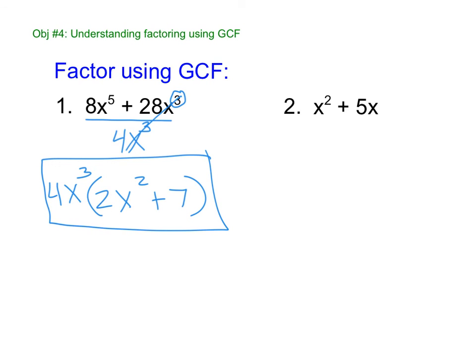We turned it into a problem that looks like we're supposed to distribute. Number 2, what is the GCF? So since there's no number in front of x squared, it's just a plain x. So we divide. x squared divided by x is x. 5x divided by x is 5. Parentheses, GCF on the outside.